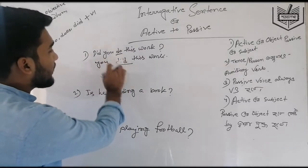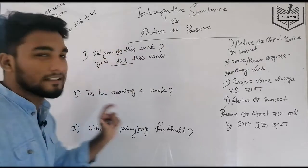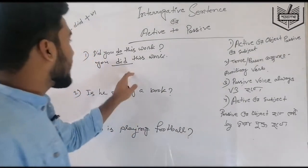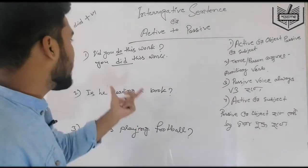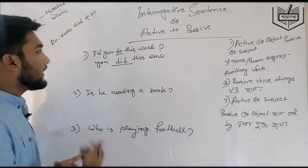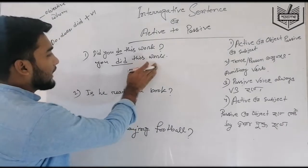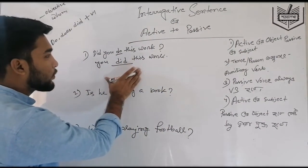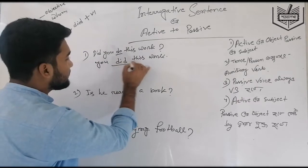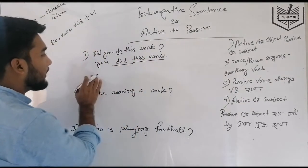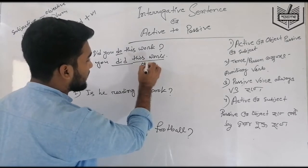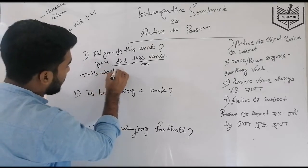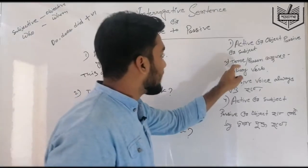So in the passive, the active object becomes the passive subject. The object 'this work' moves to become the subject of the passive sentence. Normally when converting to passive, the active object takes the subject position. So 'this work' — an object — becomes the passive subject.